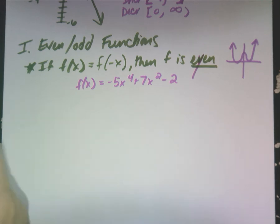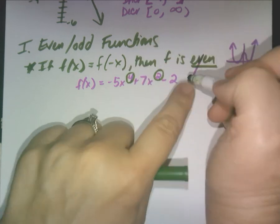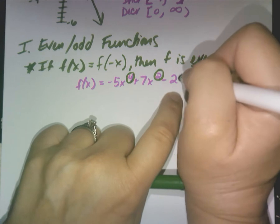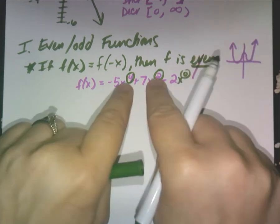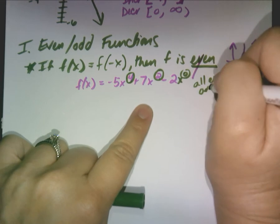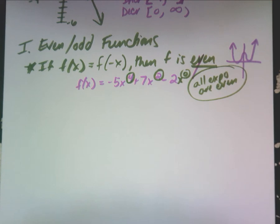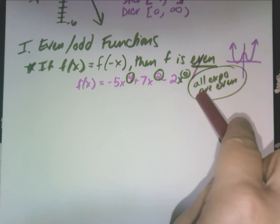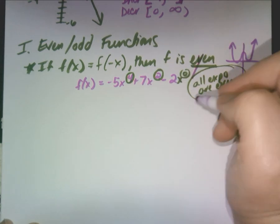If all the exponents are even — and a number by itself has x to the zero, which is even — then the function is even. You wouldn't even have to put it in your calculator. That's how you remember even functions: they flip over the y-axis.